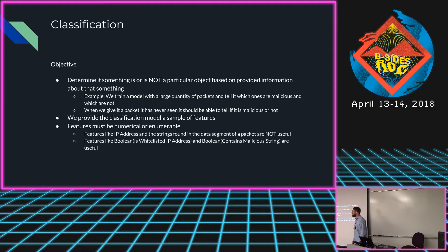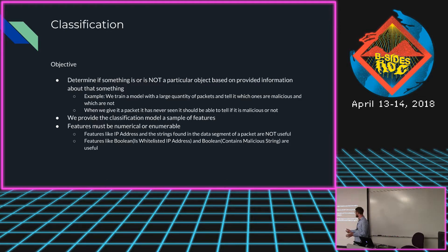We're particularly interested in classification. There are two different types of machine learning: regression, which is predicting a value, and classification, which is determining if something is or is not a particular object based on provided information. So we have a large quantity of packets - we train the model by telling it which packets are malicious and which ones are not. When we give it new packets it's never seen before, ideally it should be able to tell us if they're malicious or not. We provide the classification model with these features, it does all the math, and then we have our results.